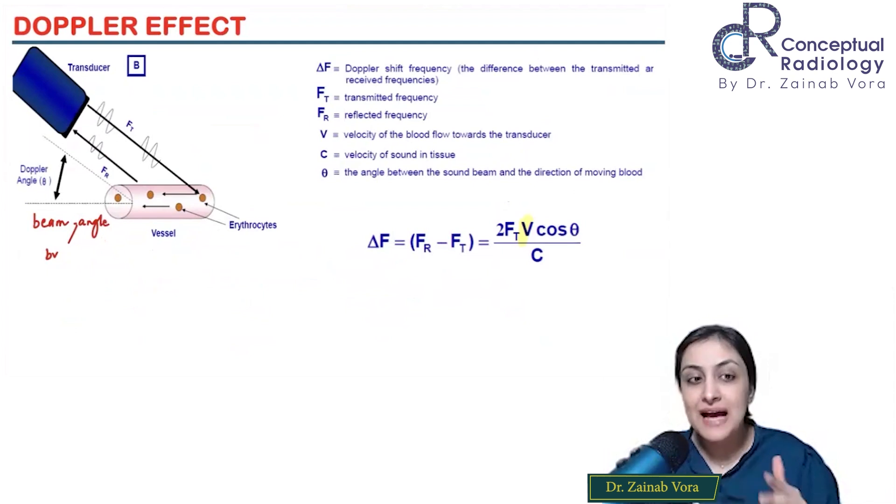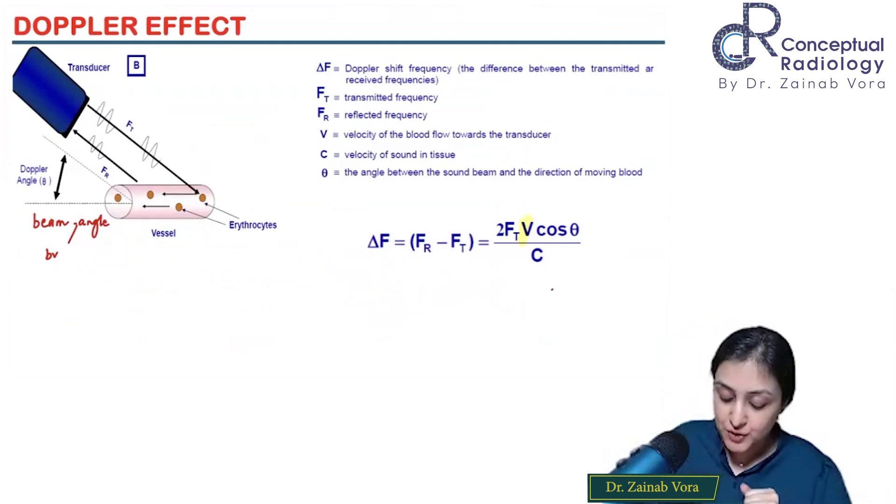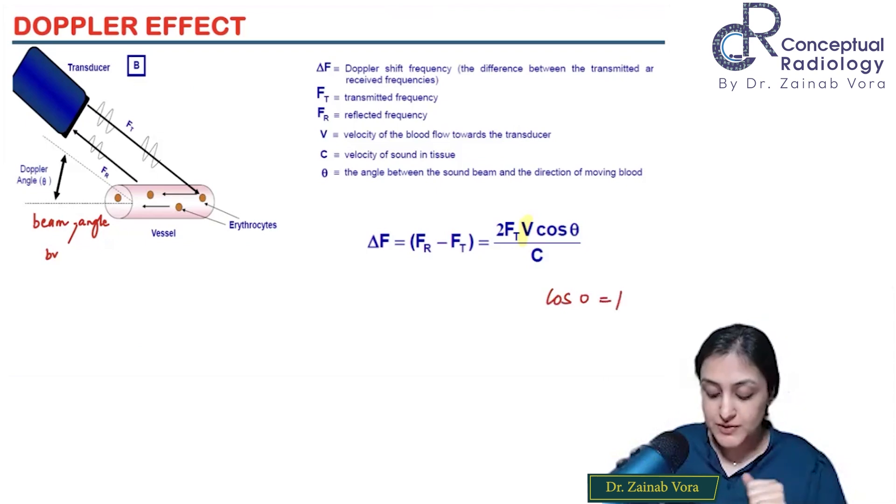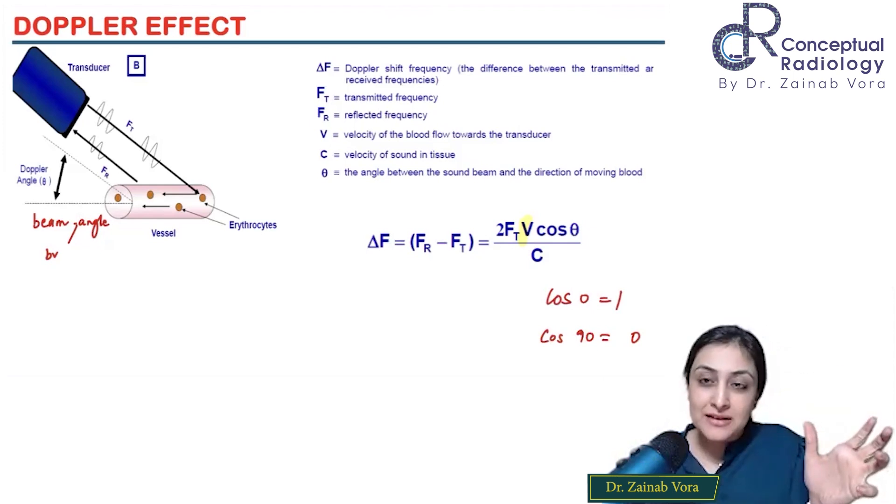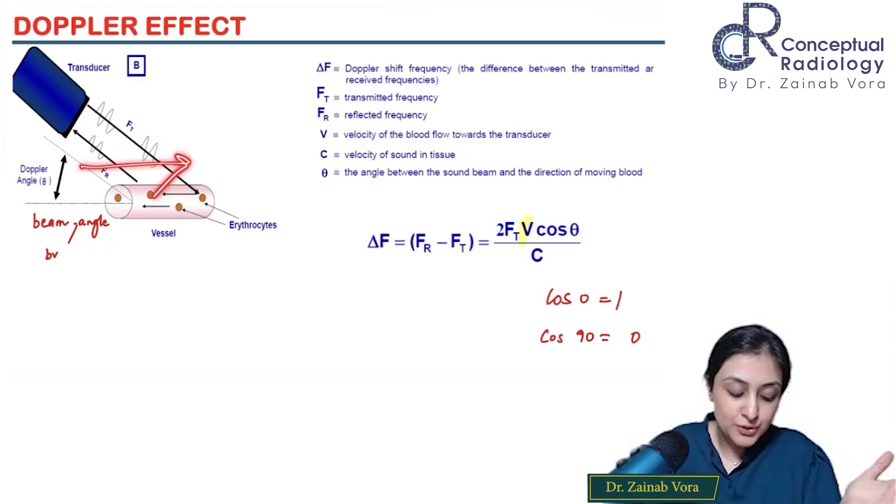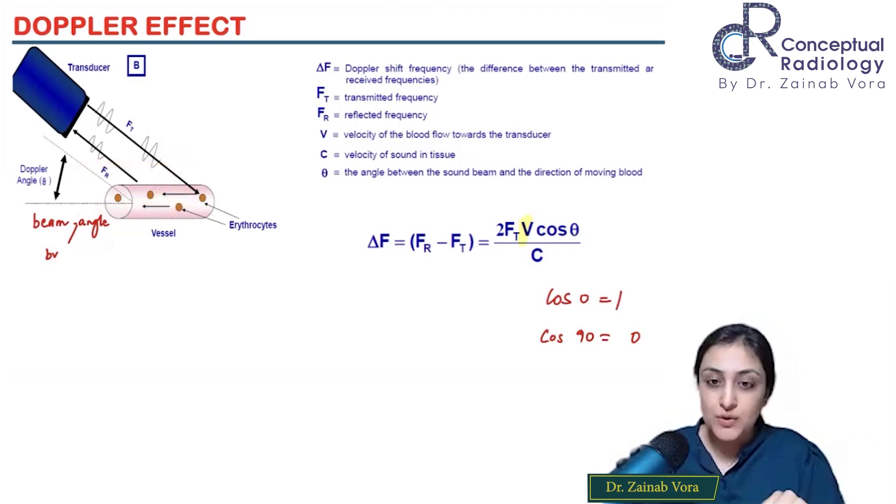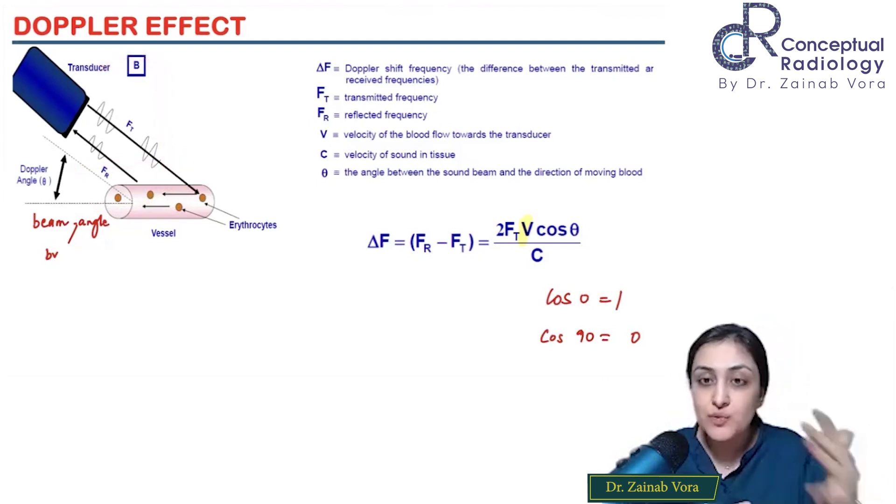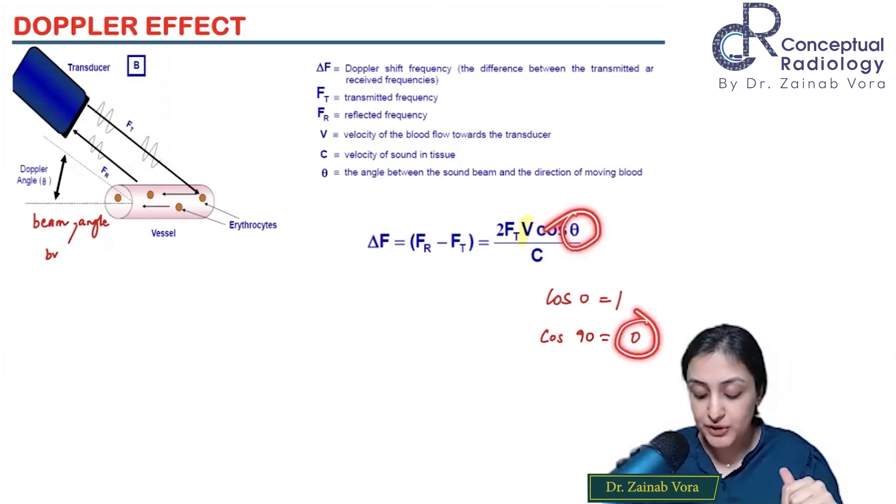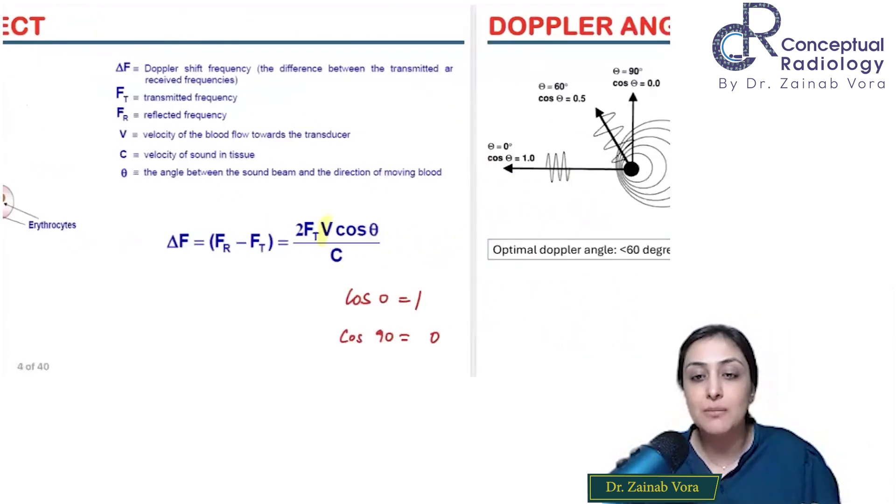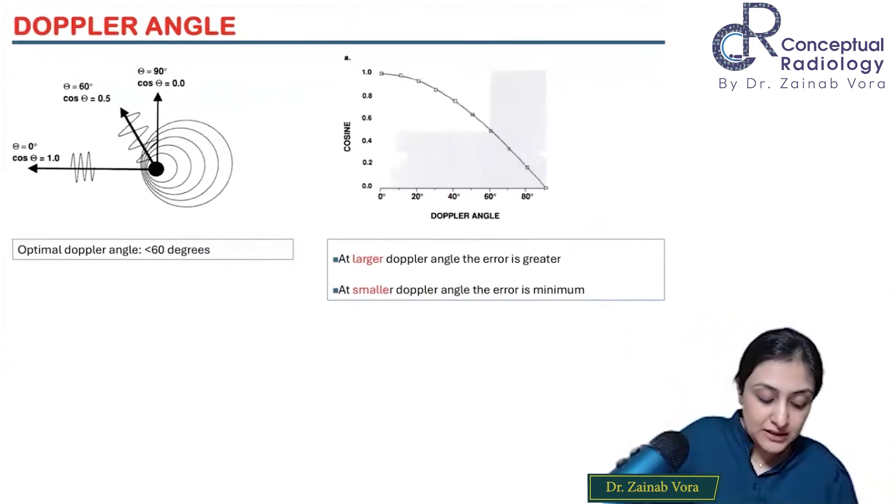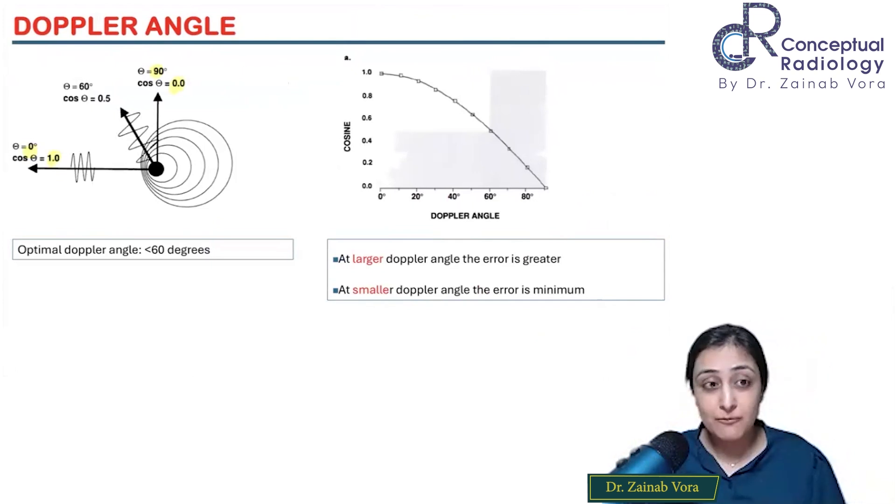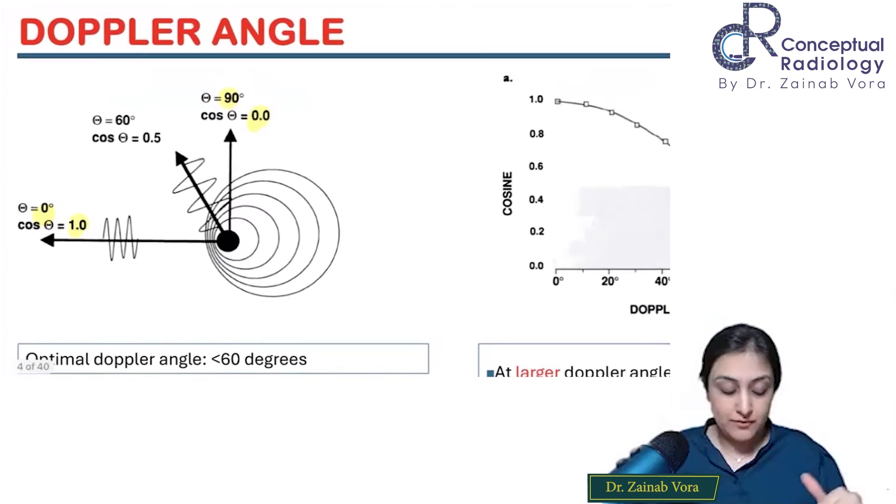A little bit of math. What's the ideal angle? Cos 0 is 1, cos 90 is 0. Can I ever be parallel to the vessel? I can never be parallel, where my cos will be 0. That's not possible. I can be perpendicular, but I don't want that. When I'm perpendicular, I'm not going to get any velocity - my velocity reading will be 0.